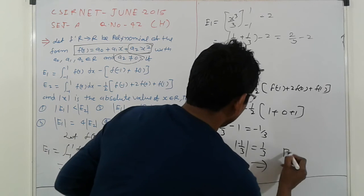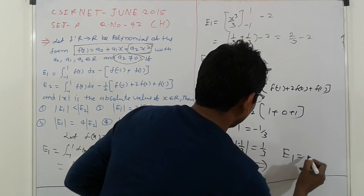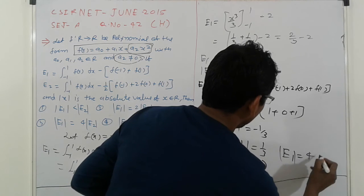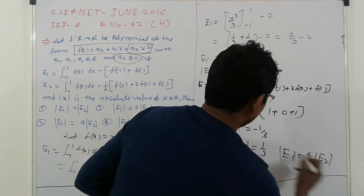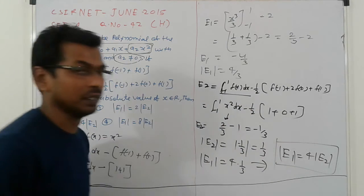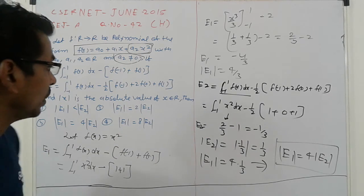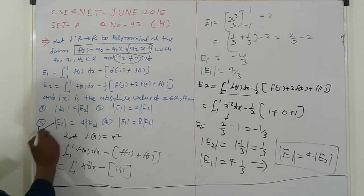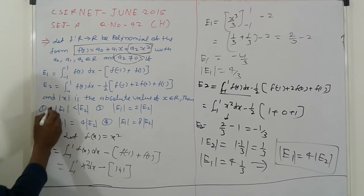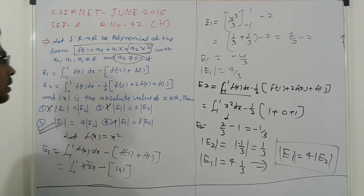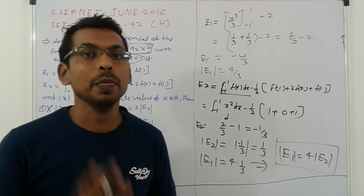It means this implies that mod E1 equals 4 mod E2. So that is your answer. Go to the options, third option is correct. The others are wrong. Thank you, bye-bye.